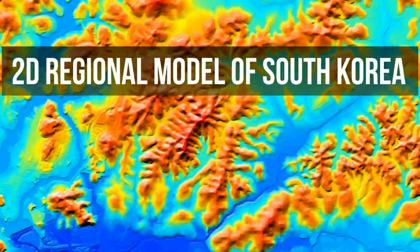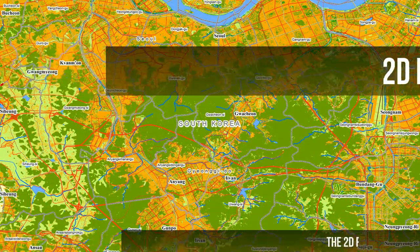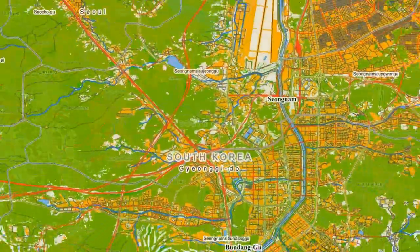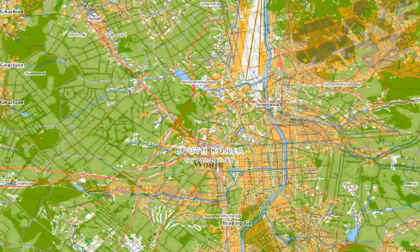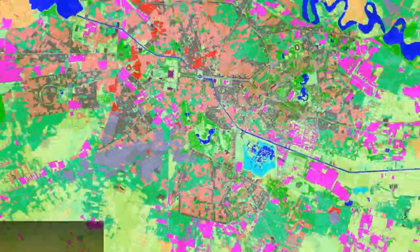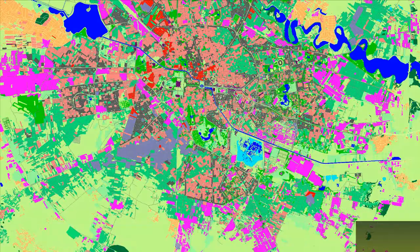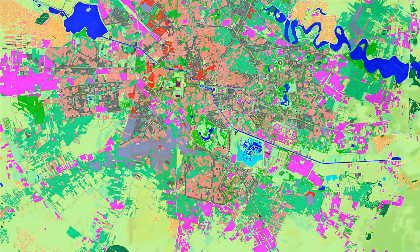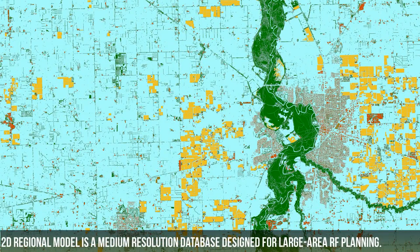The 2D regional model covers the whole area of the country — 100,210 square kilometers — including a medium precision vector map, road network dataset, and clutter or land use classified into different classes: built-up areas, water, landscape, and vegetation. This 2D regional model is a medium to low resolution database designed for large area RF planning.